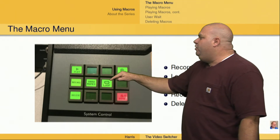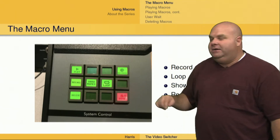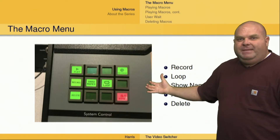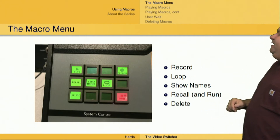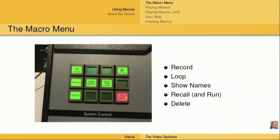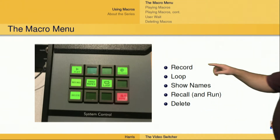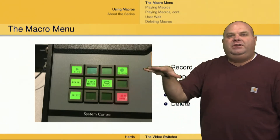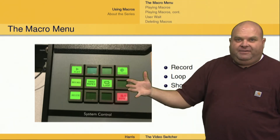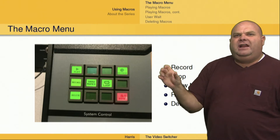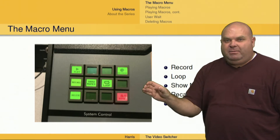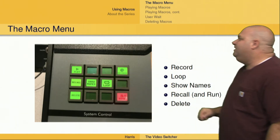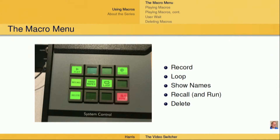We also have the ability to loop the macro. If I push that loop button, then when I push that play button and it reaches the end of the macro, it's going to start again at the beginning of the macro and just keep on running indefinitely. Next, I have the show names button right here. If I push that and hold it, it's going to show the name of the macro if I've defined a name. It's a lot easier to define a name and refer to the name of the macro as opposed to simply macro 2 or macro 4. Holding that show names button gives us the name of the macro.